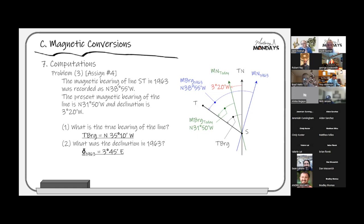Here's my sketch. Using today's magnetic bearing and declination together, we can recreate the true bearing by adding those two together. Then if we compare that to the magnetic bearing from 1963, that gives us the declination in 1963. It all comes down to being able to visualize it with a sketch and remembering what changes — only the magnetic meridian changes. The line is physically on the ground and can't be moved, and true north can't be moved either.